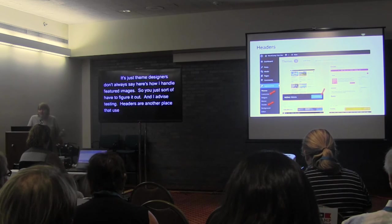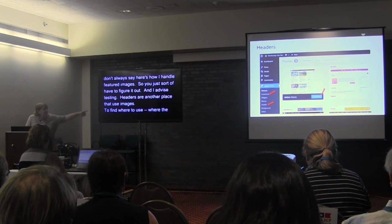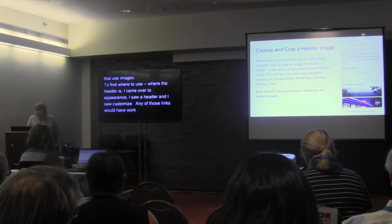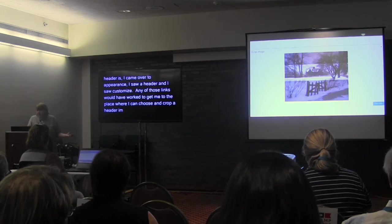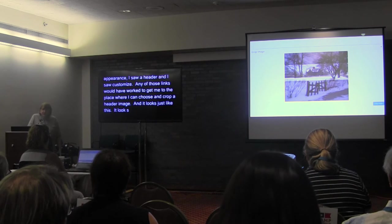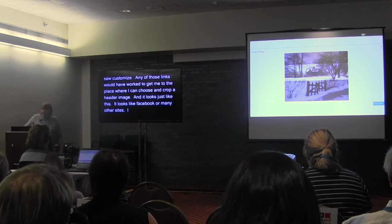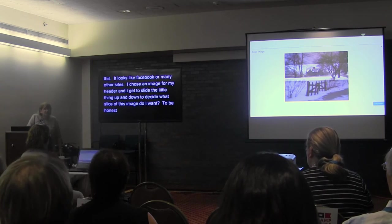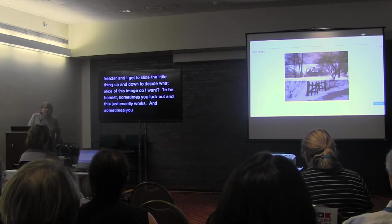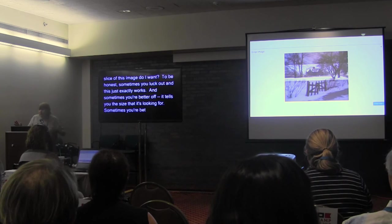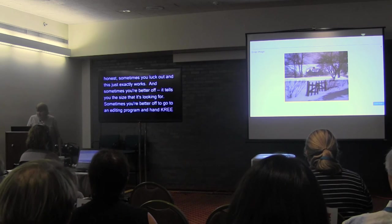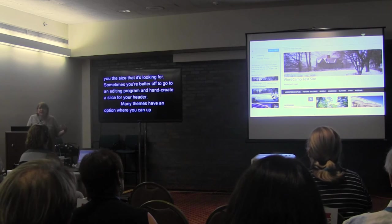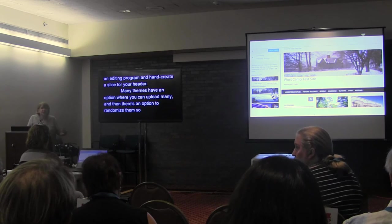Headers are another place that uses images. To find where the header is, go to Appearance — you'll see a Header option and Customize, and either would get you to the place where you can choose and crop a header image. It looks just like Facebook or many other sites. I chose an image and get to slide a selector to decide what slice of the image I want. Sometimes this works perfectly; sometimes you're better off going to an editing program and manually creating a slice for your header. Many themes have an option to upload multiple header images and randomize them, so you get a different header every time someone loads the page.